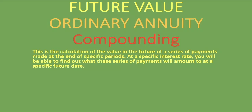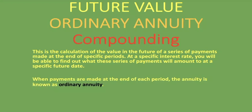We've done other lessons on the present value of an ordinary annuity, the future value of an annuity due, and so many more — you'll find the links to all those lessons in the description below. When payments are made at the end of each period, the annuity is known as an ordinary annuity. You should be able to differentiate between an ordinary annuity and an annuity due, and you can check out the lessons on annuity due in the links in the description below.